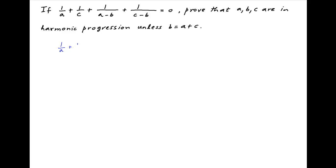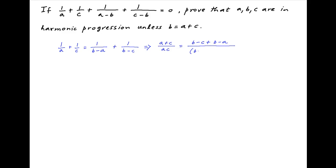The given equation can be written as 1 upon a plus 1 upon c is equal to 1 upon b minus a plus 1 upon b minus c. This implies that a plus c divided by ac is equal to b minus c plus b minus a divided by b minus a times b minus c. Now cross-multiplying,